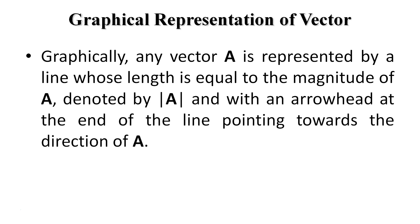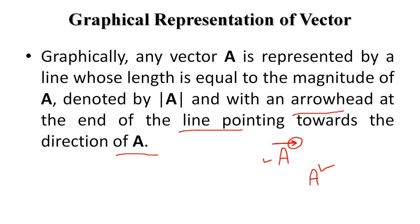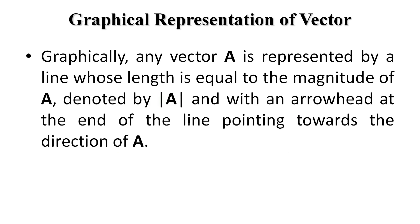So how can you represent a vector? Suppose you have a vector quantity A — you write A with an arrowhead on top of it. The arrowhead is at the end of the line pointing towards the direction of vector A. If you write simply A without the arrow, it represents the magnitude or value of vector A. So graphically, any vector A is represented by a line whose length is equal to the magnitude of A, with an arrowhead at the end pointing towards the direction of A.